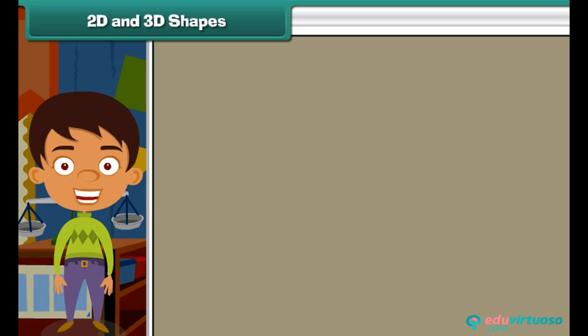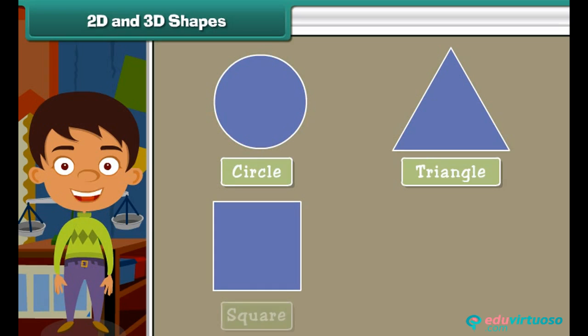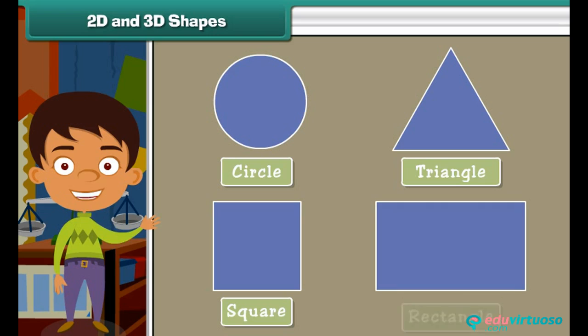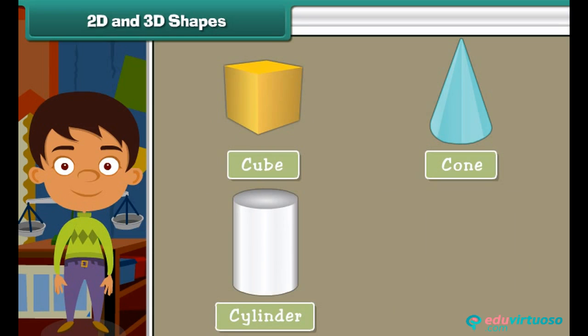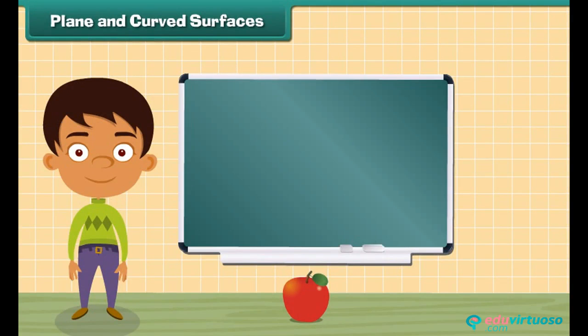Now let us talk about two-dimensional or 2D shapes. Some 2D shapes are circle, triangle, square, and rectangle. Some three-dimensional or 3D shapes are cube, cone, cylinder, and sphere.